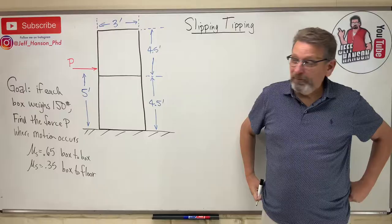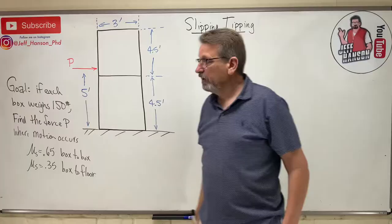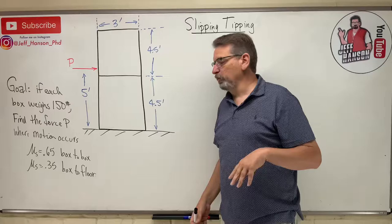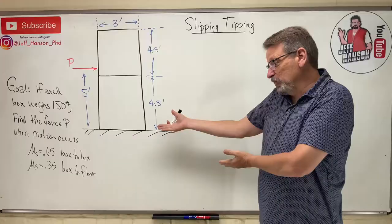It's a slipping, tipping friction problem. The goal here: you have two boxes stacked on top of each other. If each box weighs 150 pounds, find the force P where motion occurs. Now this is usually where the wheels fall off — if I ask my students what that means, what does 'motion occur' mean? If I push on that box, what can happen?